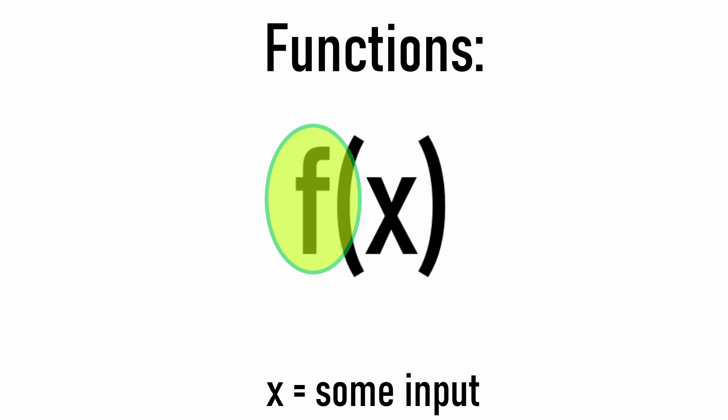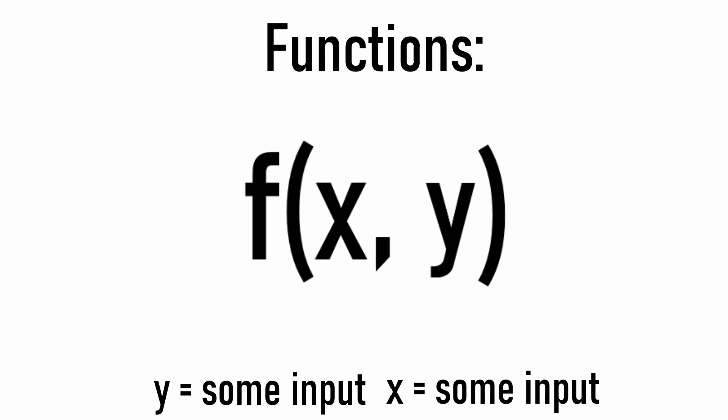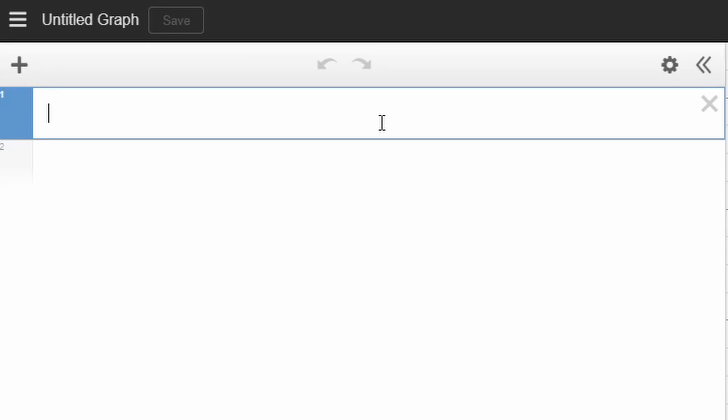We can use some variable to give the function a name and pass an input into it within parentheses. An input doesn't just have to be one number, though. We can separate values with a comma to add more inputs. Now the function can do work on both of these values in order to give us a value back.